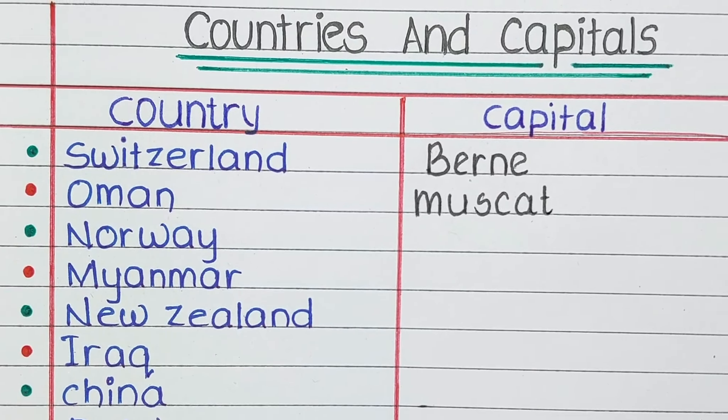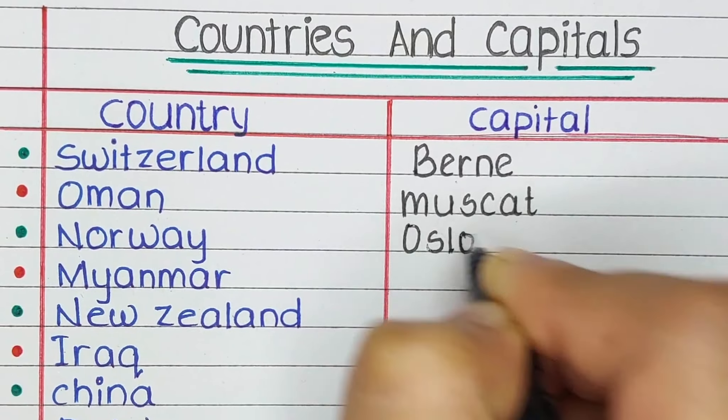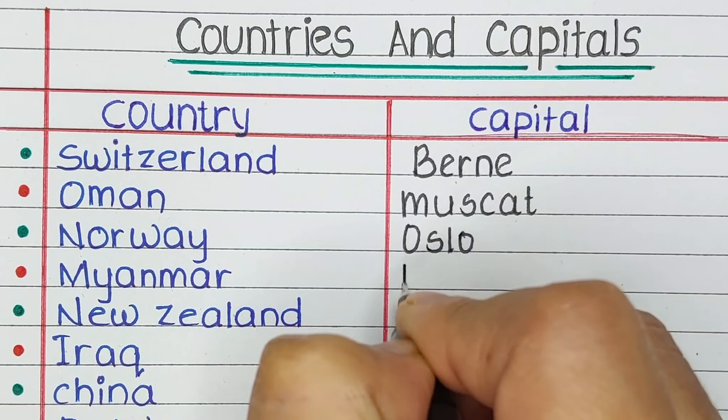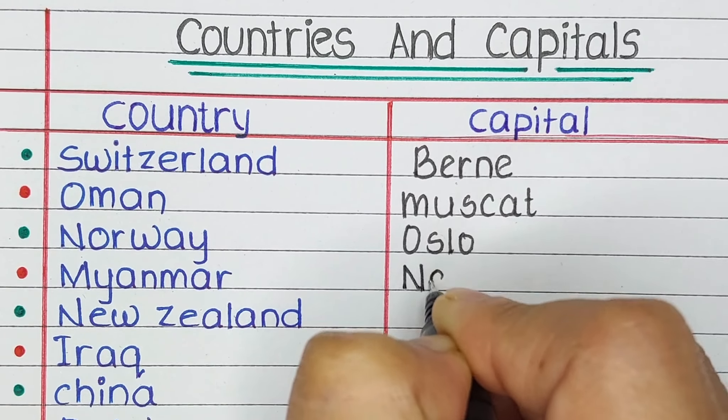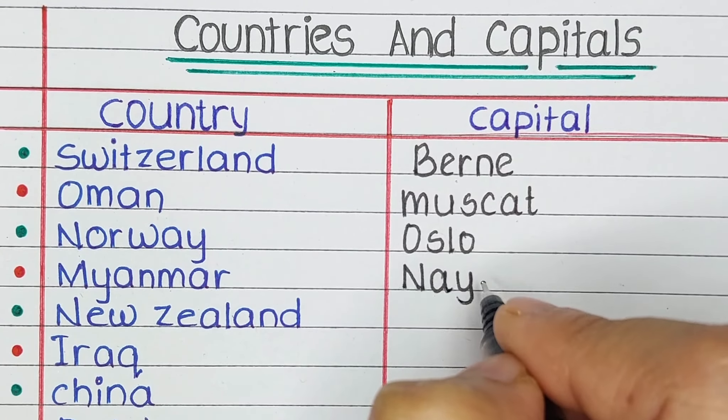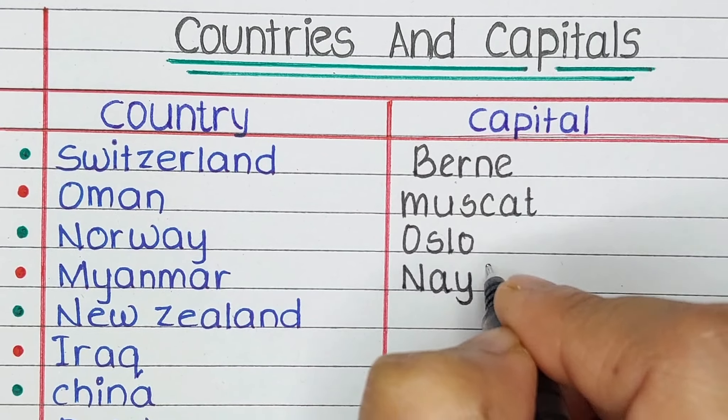Next is Oman. The capital of Oman is Muscat. Next country is Norway. The capital of Norway is Oslo.